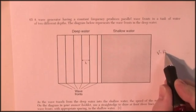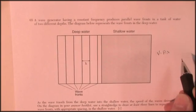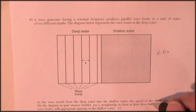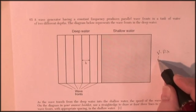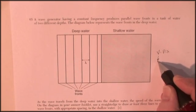So velocity equals frequency times wavelength. And we're told that the speed is going to go down. The velocity is going down. The frequency must stay the same.